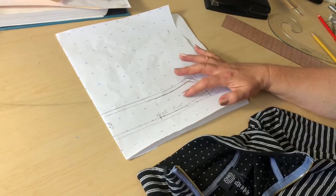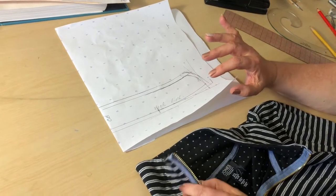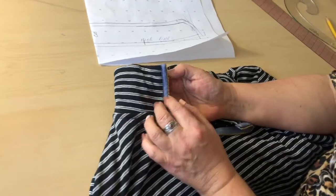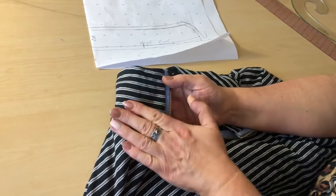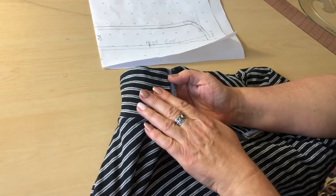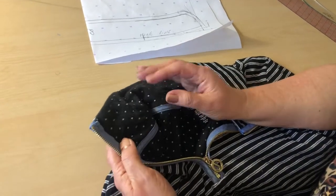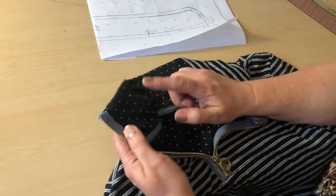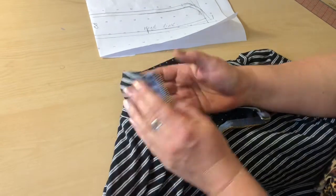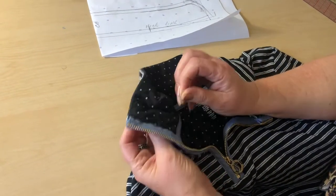Before I cut my collar out of the paper I would like to explain something for you. Can you see one that we can see from outside and the other one is hiding inside? So this is called a top collar and this one is called under collar.